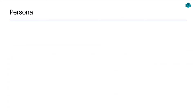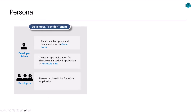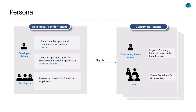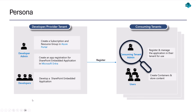Let me take you through the personas we are specifically talking about here. We start with the developer tenant, where development of the SharePoint Embedded application happens. There are two personas: the developer admin who sets up the tenant and billing profile, and the developers creating the application. Once the application is ready, it is registered in the consuming tenant. There, the consuming tenant admin registers and manages the application, and tenant users create containers and store content in the application.